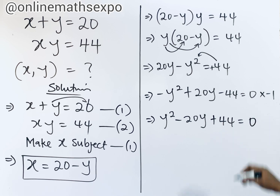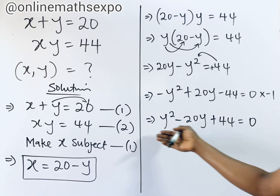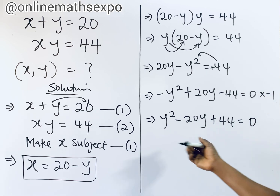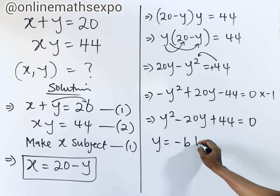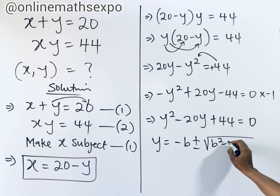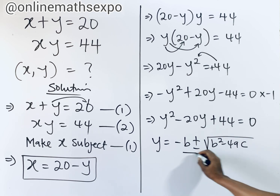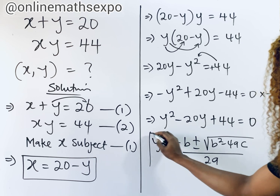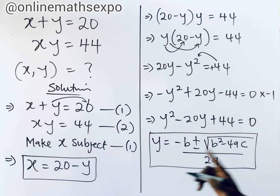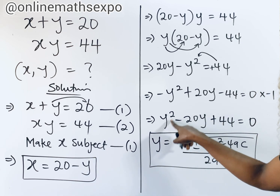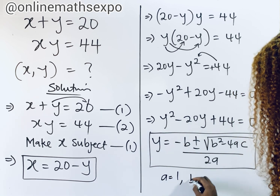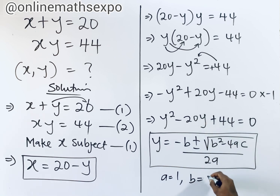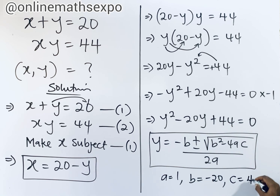So this is what we have. To solve this quadratically, the formula says y equals negative b plus or minus the square root of b squared minus 4ac, divided by 2a. So this formula will be our guide. Now remember that a is the coefficient of y squared, so a equals 1. And b is the coefficient of y, which is negative 20. And c is the constant, which is 44.